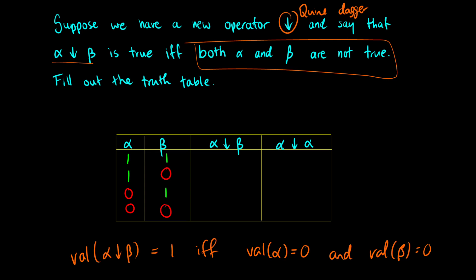Now, alpha down beta, it's only true if both alpha and beta are zero. So we know it's going to be true in the final row. And then in the first three rows, alpha and beta are both true, so alpha down beta is false. In the second row, alpha is true, so alpha down beta is false because both of those need to be false. And in the third row, beta is true, so alpha down beta is false because both alpha and beta need to be false.